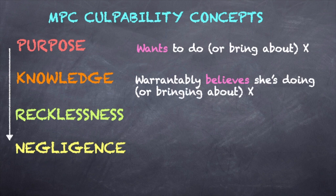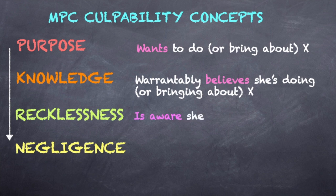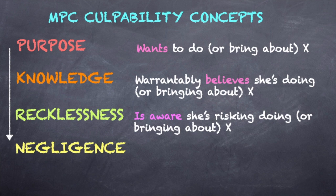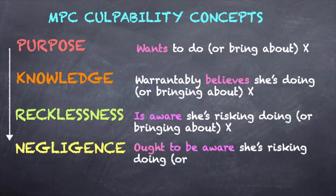Knowledge exists where the actor warrantably believes that she is doing or bringing about X, and of course X is done or brought about. Recklessness may be present whether or not X is done or brought about; the reckless actor is aware she is risking doing or bringing about some harm. Lastly, negligence need not involve the actor's awareness, but the actor ought to be aware that she is risking doing or bringing about something.